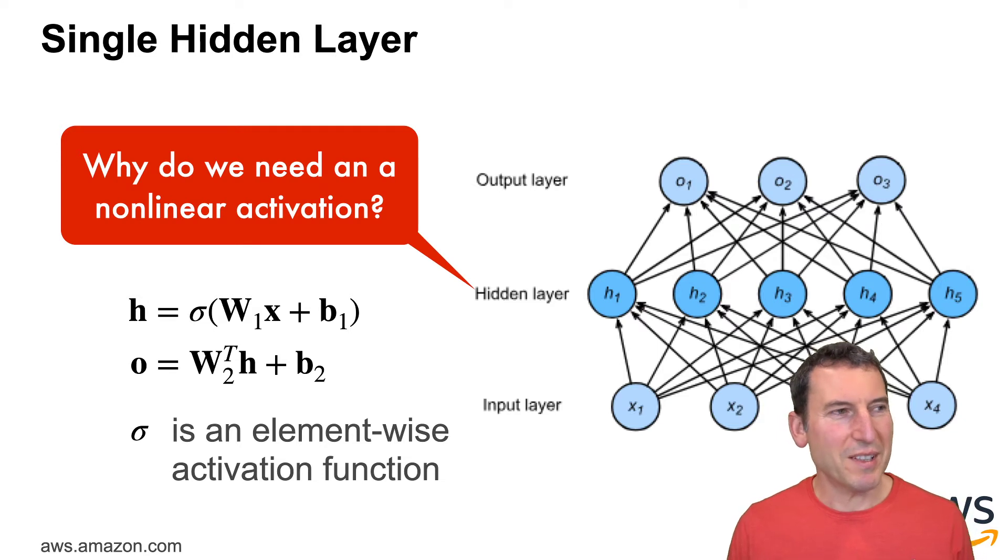The obvious question that arises is, why on earth do we need a non-linear activation function? And mind you, this is a common mistake that one makes when implementing a neural network. You go and write your code, everything looks fine and you run it and it doesn't work. Then after a lot of debugging and some sheepish embarrassment, and I must admit it's happened to me too, more than once, you then realize, oh my God, I'm an idiot. I forgot to add the non-linearity. It's a trivial mistake. Make sure you do that when you implement your code.